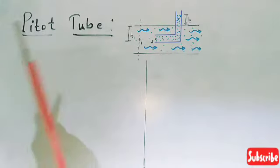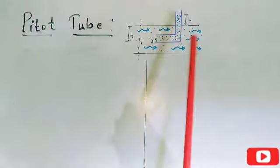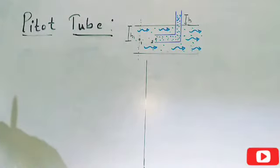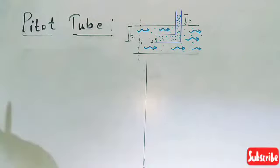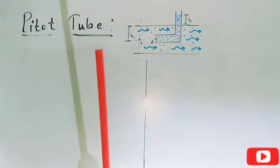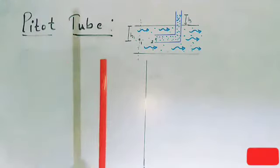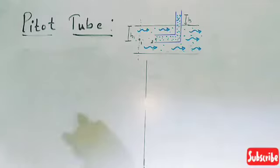The principle of the pitot tube was developed by Henri de Pitot. It works on the principle that if the velocity at any point becomes zero, the pressure head at that point increases due to the conversion of kinetic energy into pressure energy. In any flow, if the velocity at a point becomes zero, there will be a conversion of kinetic energy into pressure energy, and as a result the pressure at that point will increase.